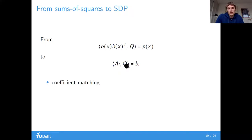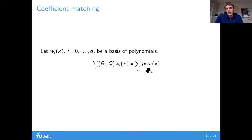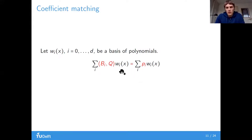To explain coefficient matching: suppose we have some basis of polynomials. We can express both sides of the equation in terms of this basis — expressing polynomial p as coefficients with respect to the basis, and the matrix B(x)·B(x)^T also with respect to the basis, retaining an inner product with the variable Q. Since this is a basis, the polynomial equality holds if and only if the coefficients are equal. This gives the semi-definite constraints.